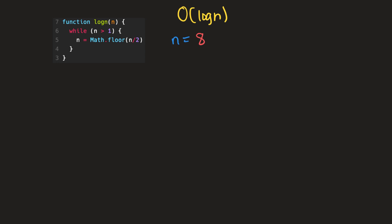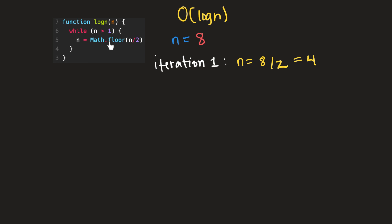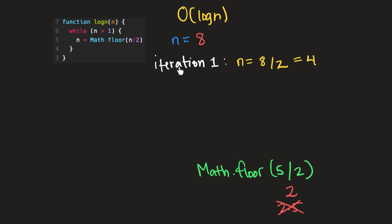So our n is going to be halved for each iteration. Currently, our n is equal to eight because we passed in eight as n, and while n is greater than one we're going to iterate. So right now n is eight, which is greater than one. So we'll do math.floor of n divided by two for our first iteration, which would set our n equal to eight divided by two, which is four. And this math.floor floors the result of our division — for example, math.floor of five divided by two gives us two instead of 2.5. So after this first iteration, our n is now equal to four. Since four is greater than one, we're going to do another iteration.